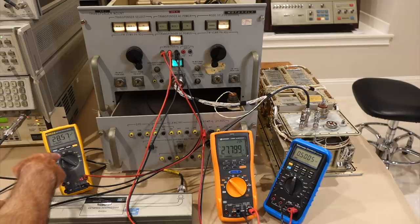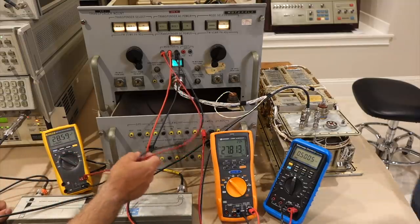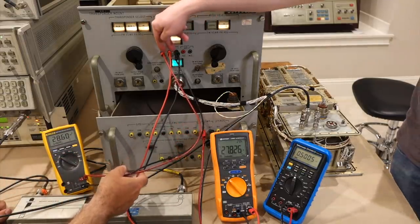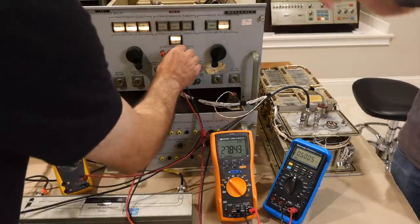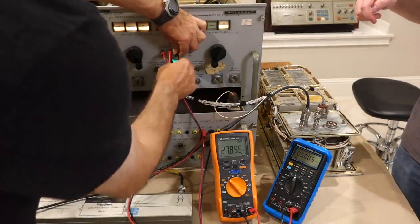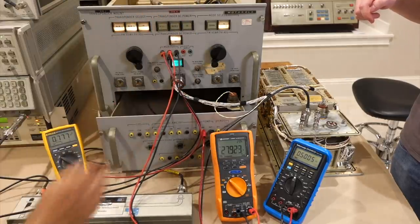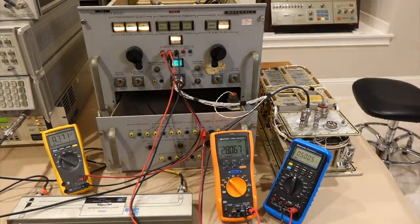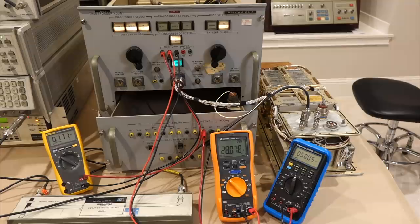This measures also 28 volts. There's 10 ohms between these two. Oh, I need to measure over here. Yes, that'll get you the voltage across that 10 ohms. There you go. 77 milliamps. All right. So, that seems reasonable. We haven't blown anything. We have power on the transponder.